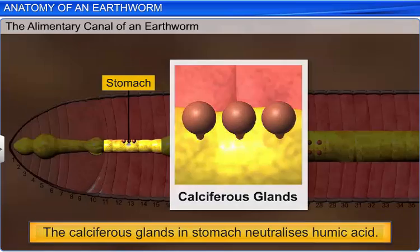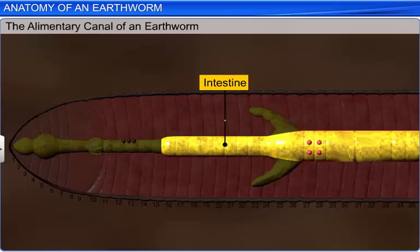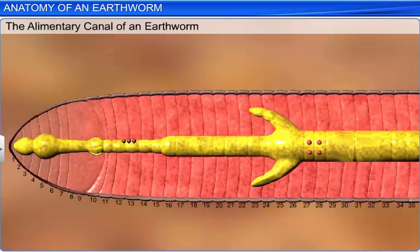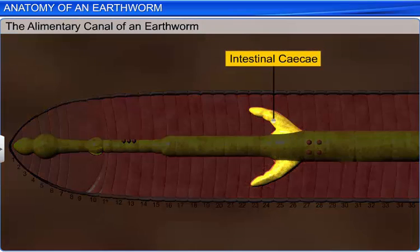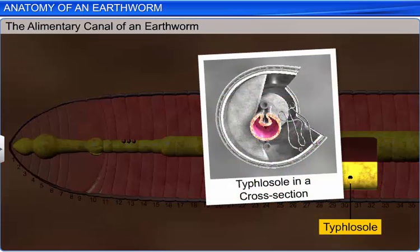The stomach continues into a long intestine, which starts from the 15th segment and continues till the last segment. A pair of short conical projections of intestinal caeca is present on the 26th segment. The intestine shows internal folds called typhlosole between the 26th and the 35th segments, which increases the surface area for better absorption of digested nutrients.